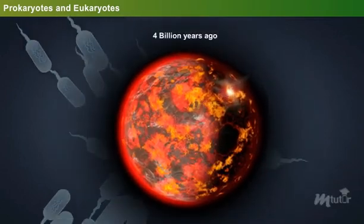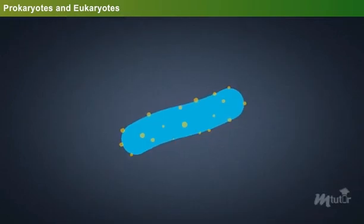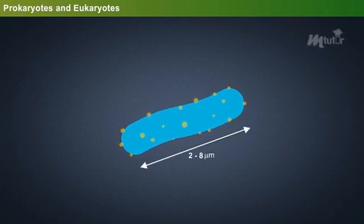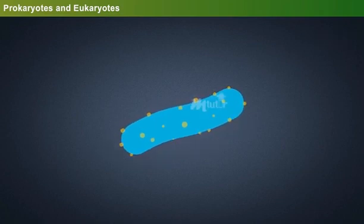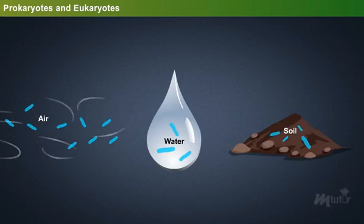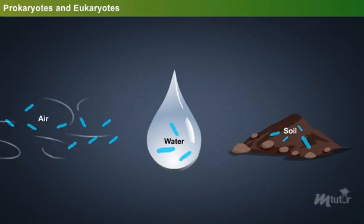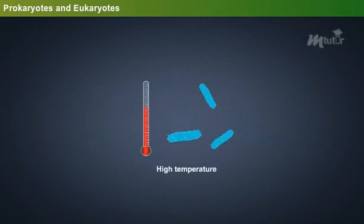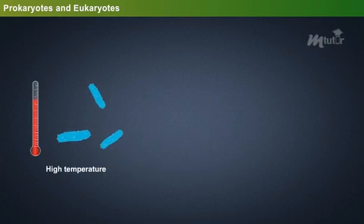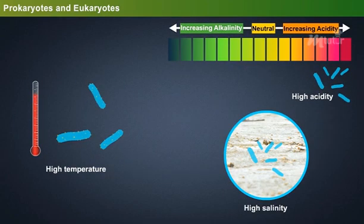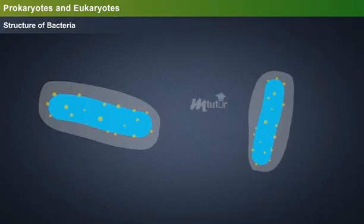The size of bacteria is very minute, measuring about 2 to 8 micrometers in length and 0.2 micrometers in diameter. Generally, bacteria are found in air, water and soil, and can survive in all extreme conditions such as high temperature, high acidity, high salinity, etc.